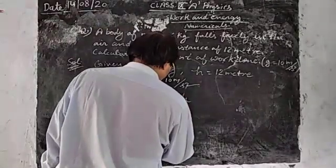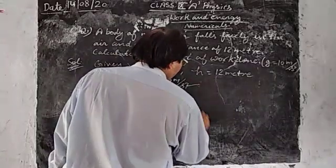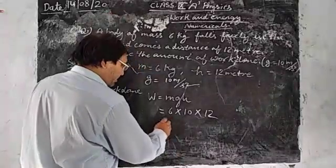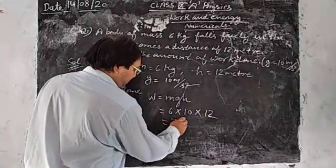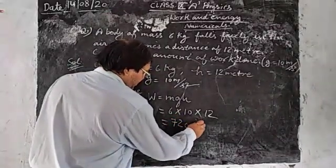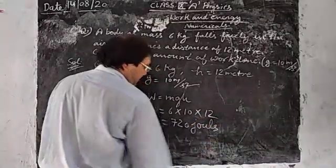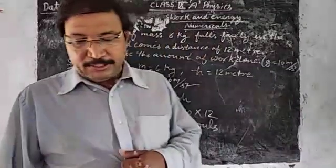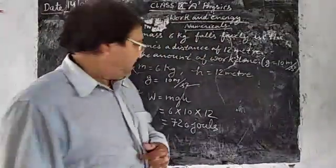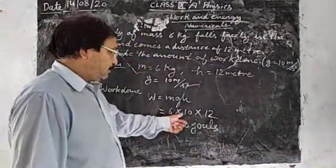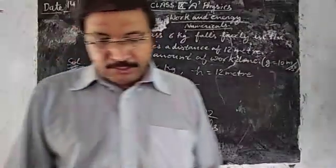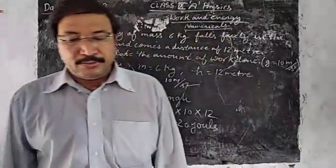6 into 10 into 12 equals 720. So work done here is 720 Joules. Okay.